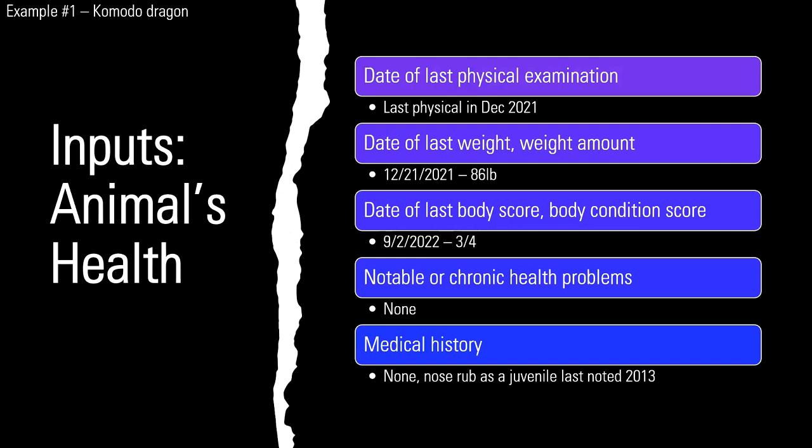The fourth major category for welfare inputs is the animal's health. This is typically where you include information on physical exams, weights, any changes in weights, current weights, and body condition scoring — which a lot of times is done by a vet, depending on the species being assessed.